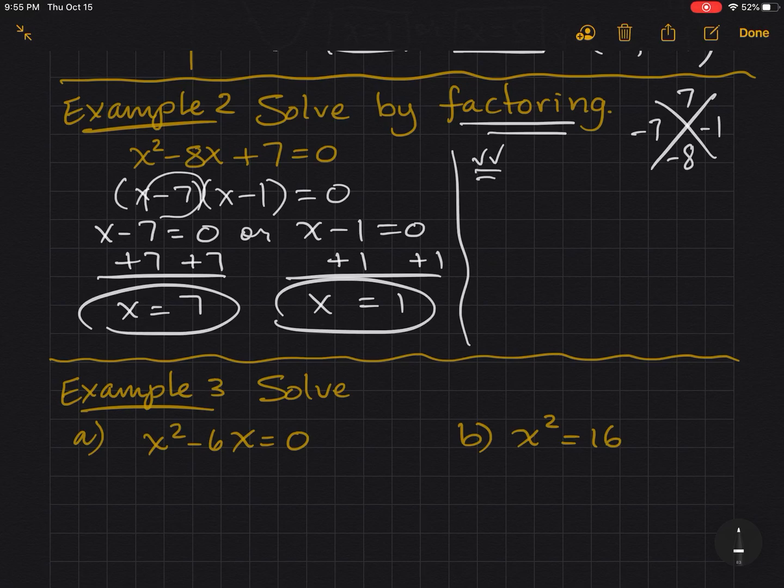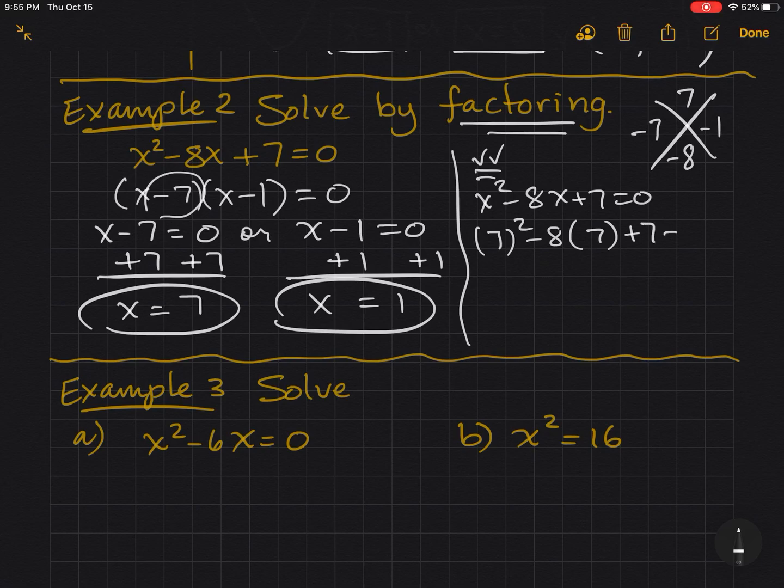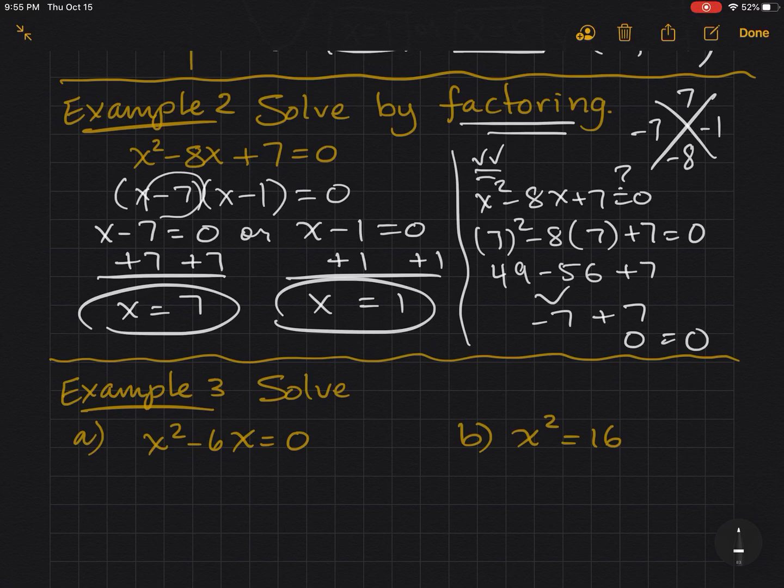So if you start with your original equation and plug in the 7 in for all the x's, you'll see that, in fact, it does equal 0. 49 minus 56 plus 7, we get a negative 7 plus 7 is 0. And you could check the 1, and you'll also see that it checks out. So you can always plug your solution in and make sure it works.